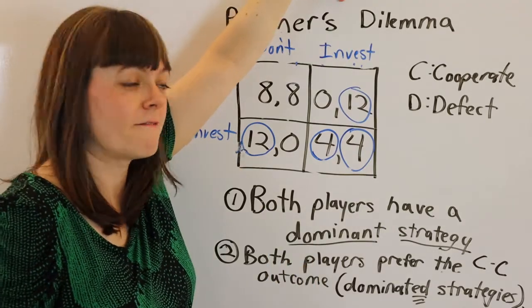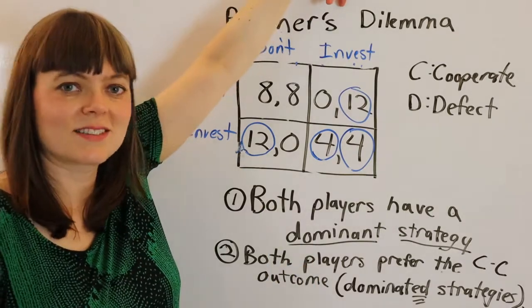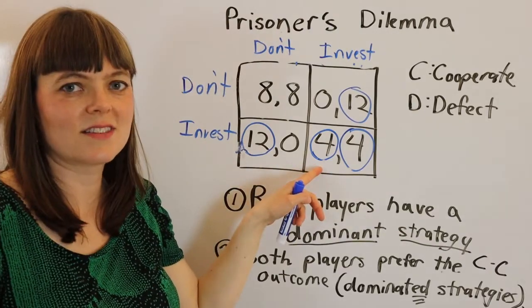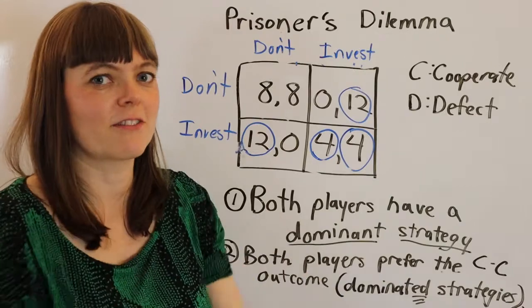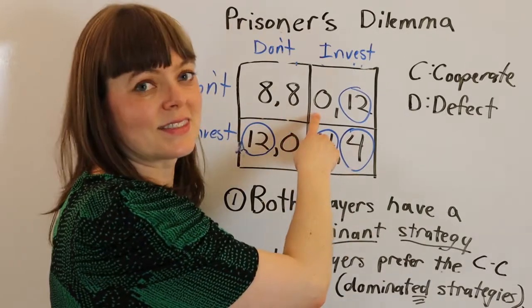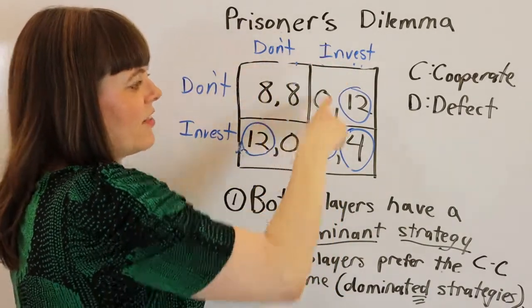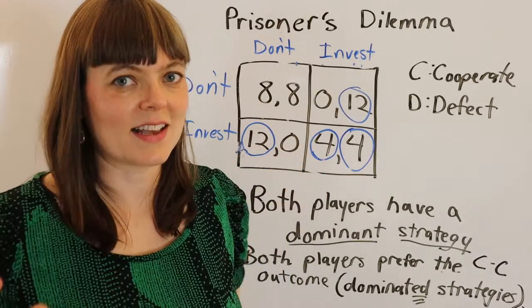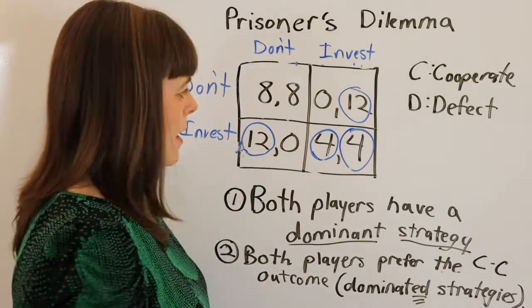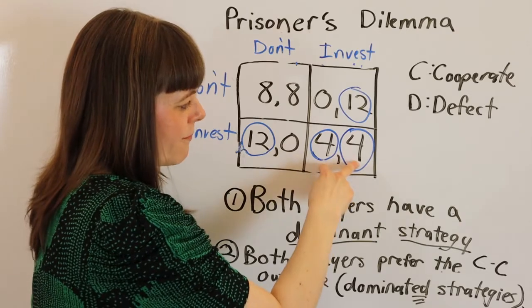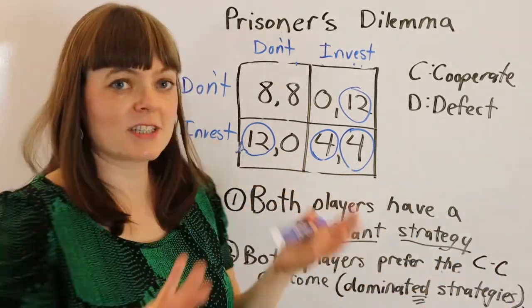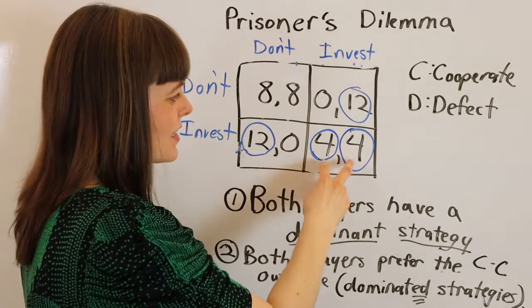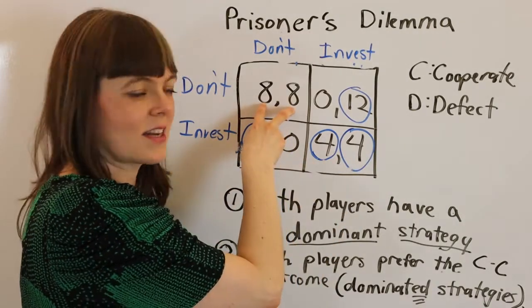Now, if the other firm invests, your best response is to also invest because if they invest and you don't, their products can be cooler. Everybody's going to flock to them. You'll be left with zero. So your best response to each of the other two player strategies is to invest. It's a dominant strategy. But both firms, of course, if they both invest, they split the market, but they've spent all this money on investment. So they get less money than if they hadn't, both hadn't invested.